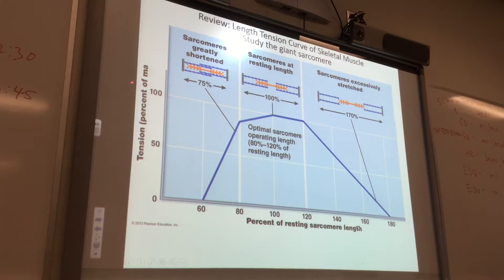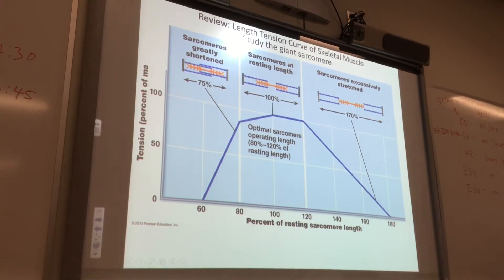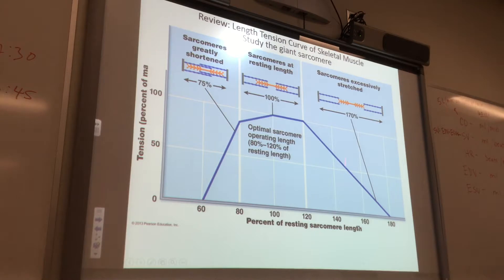You have tension, or percent of maximum — 100% of the tension or force you could generate will be generated when your sarcomeres start at optimal length. If your sarcomeres start too squinched, you can only generate about 75% of your optimal force of contraction.